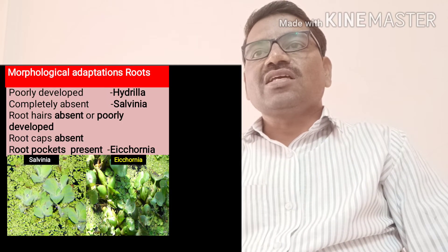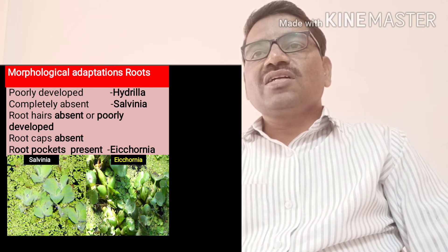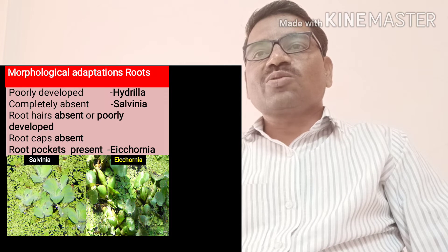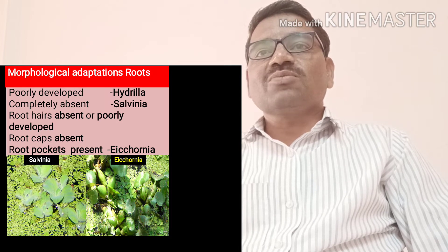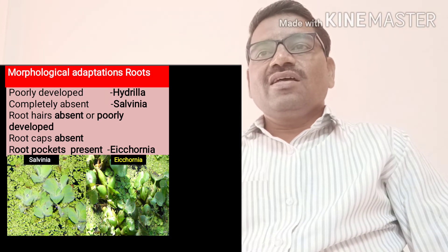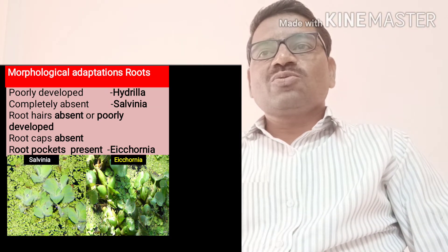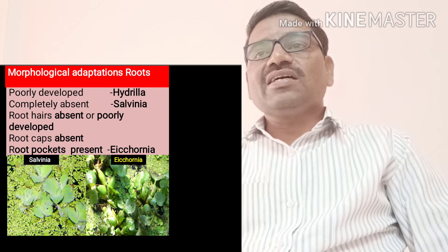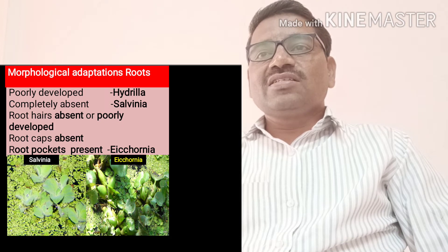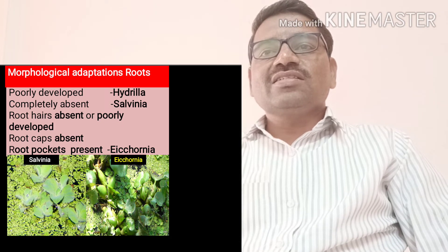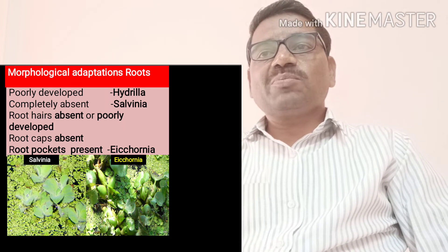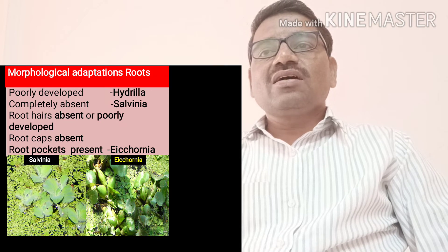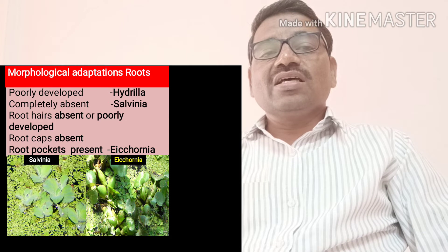Morphological adaptations in hydrophytes: when you observe different plants growing in water, in some plants the roots are poorly developed — the best example is Hydrilla. In some plants, roots are completely absent — the best example is Salvinia. In all such plants, root hairs are absent or poorly developed. Root caps are absent, but root pockets are present, particularly in Eichhornia.